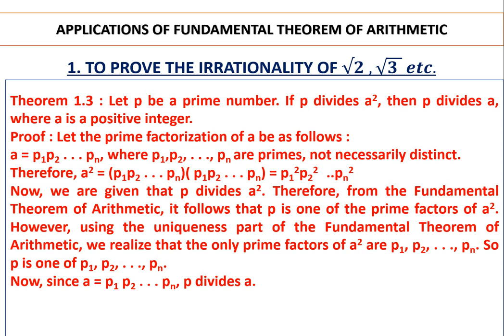In Class 9 you have studied that root 2 and root 3 are irrational numbers, and you have represented these on the number line. The decimal expression of root 2, root 3 are all non-terminating and non-recurring. Root 2, root 3, root 5 — this type of numbers will be non-terminating and non-recurring.